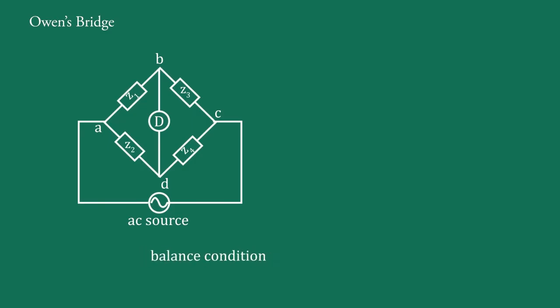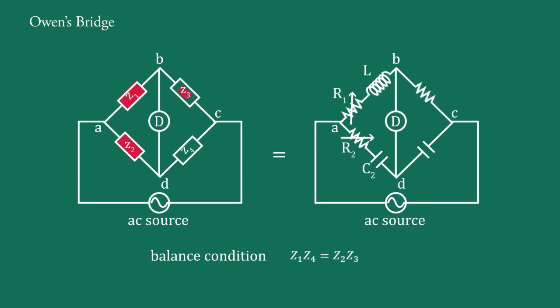Owen's Bridge. We have discussed the basic bridge in a previous video. If we take the components Z1, Z2, Z3, and Z4 this way, then it is known as Owen's Bridge. The detector D is generally either a pair of headphones or a null detector, and the source is an AC source. This bridge is used to measure self-inductance L in terms of a standard capacitance C4 and two resistances R1 and R3.